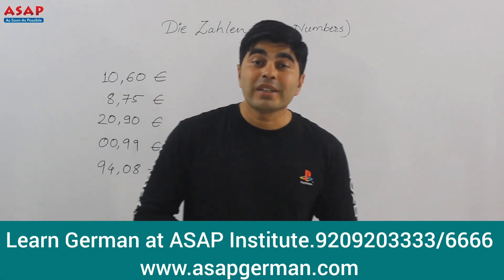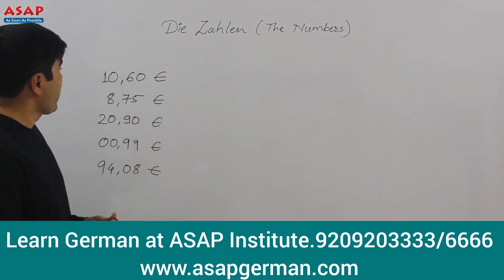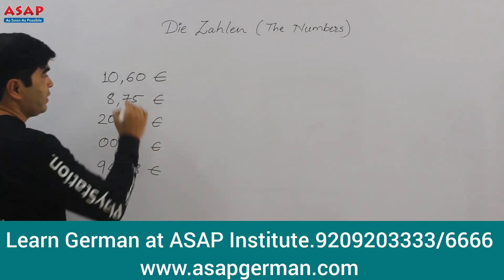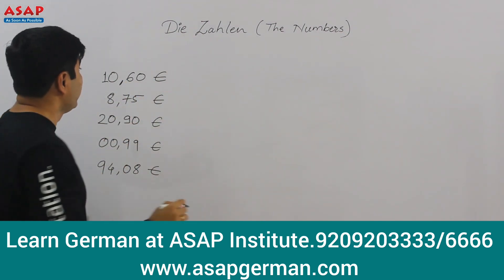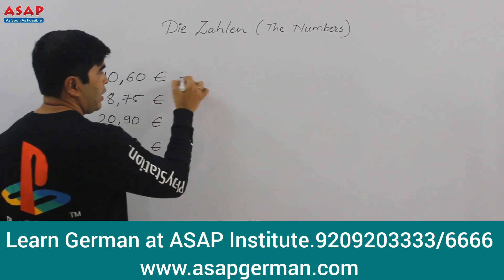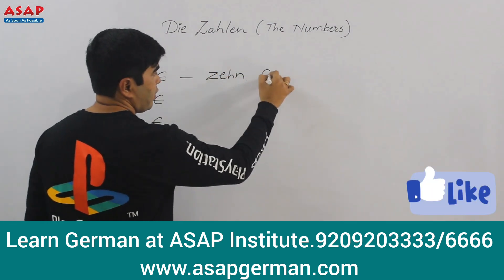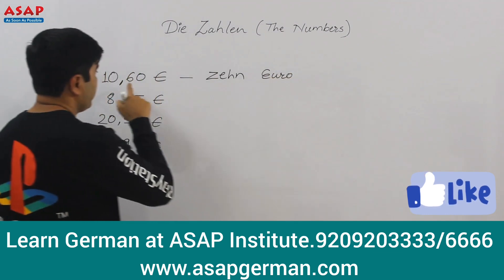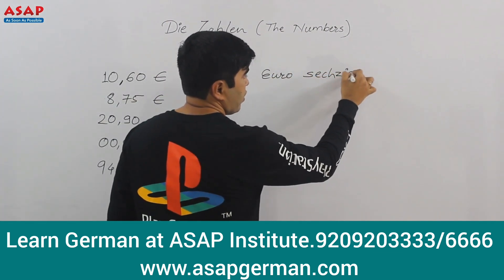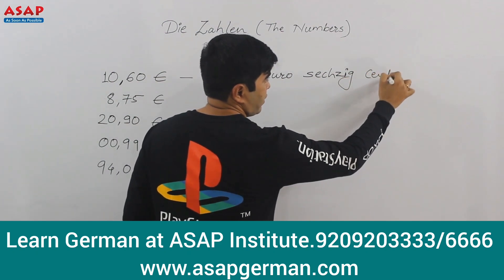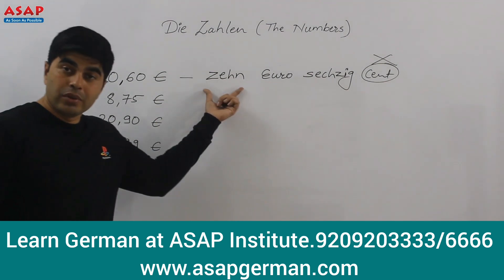We're done with the years, so let's check the prices in German. How do you read this price? First, a comma means a decimal point here. So it is — how do you read this? It is neunzig Cent. But the word 'Cent' is not used when you have some euros.